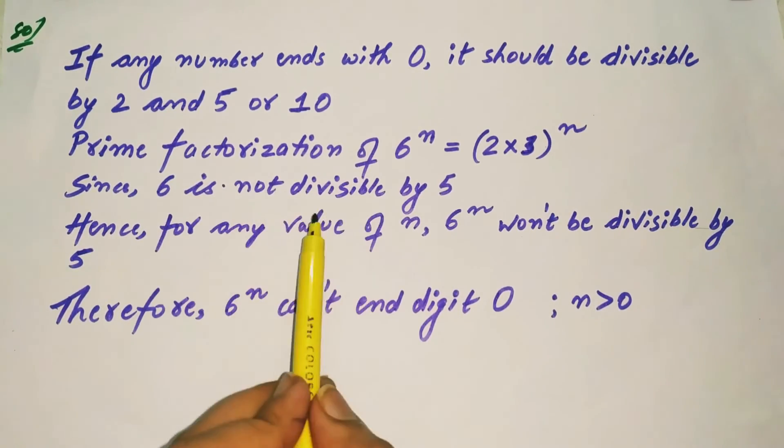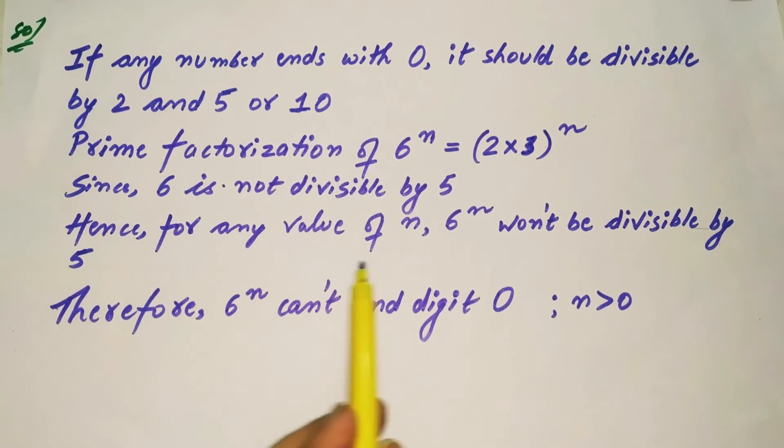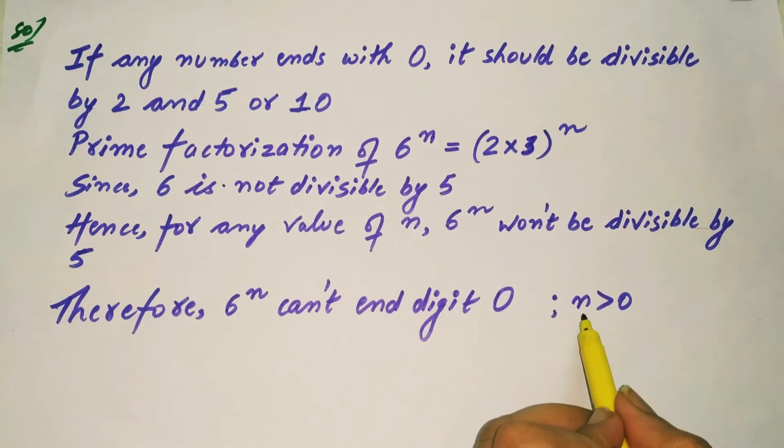Since 6 is not divisible by 5, for any value of n, 6n won't be divisible by 5. Therefore, 6n can never end with digit 0 for any natural number n greater than 0.